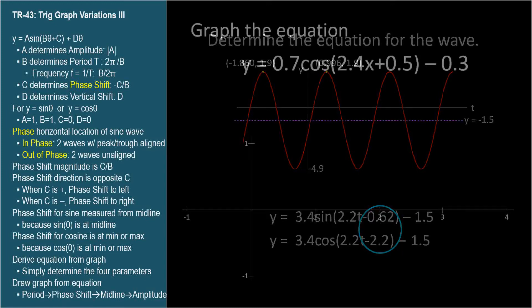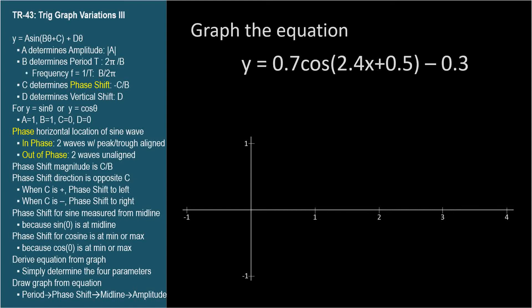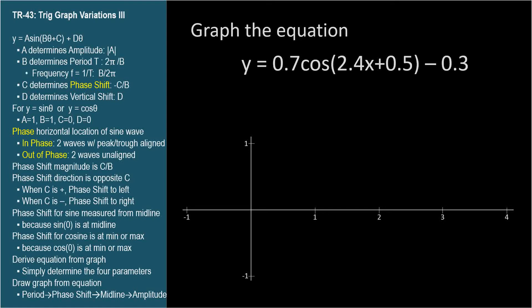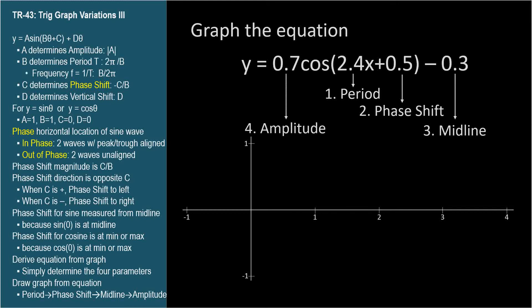Now let's go the other way: given an equation, sketch the wave. y equals 0.7 cosine of 2.4x plus 0.5 minus 0.3. The trickiest parts are the period and phase shift — the two horizontal parameters. Amplitude and midline are easy. We'll address the vertical parameters a and d last. Sometimes you'll be given a labeled coordinate system and will need to calibrate your sketch to the provided coordinates. Let's assume we're given these axes. We'll work out the period first using the b parameter, then the phase shift using c, then midline and amplitude using d and a.